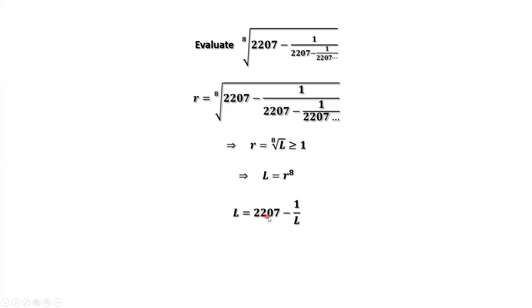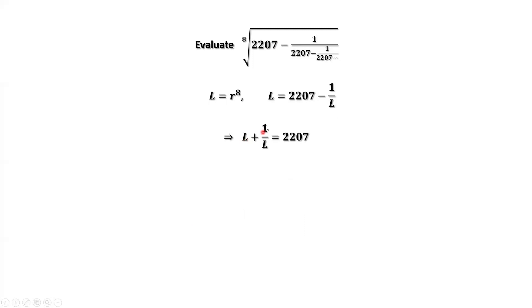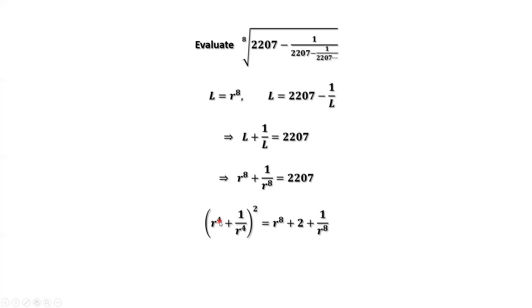Because L equals 2207 minus 1 over L, we have L plus 1 over L equals 2207. Since L equals R squared, this gives us R squared plus 1 over R squared equals 2207. We expand: R squared plus 1 over R squared equals 2207 minus 2 times R to the power of 2 times 1 over R to the power of 2 plus 1 over R to the power of 2 squared.